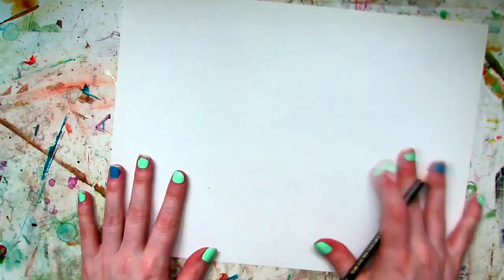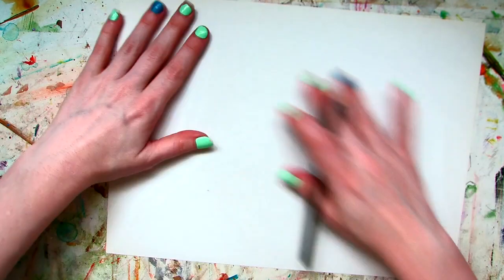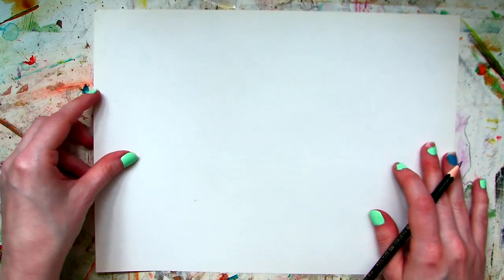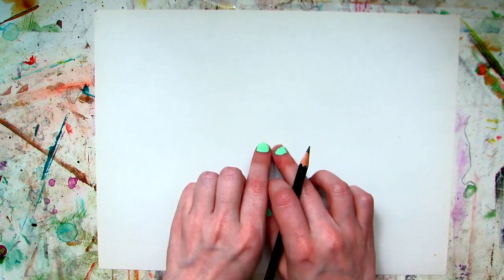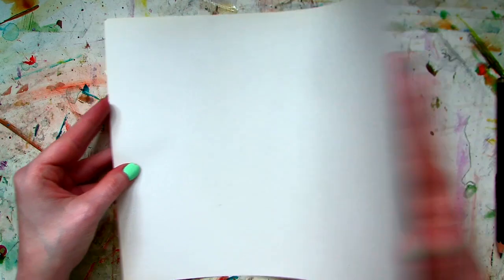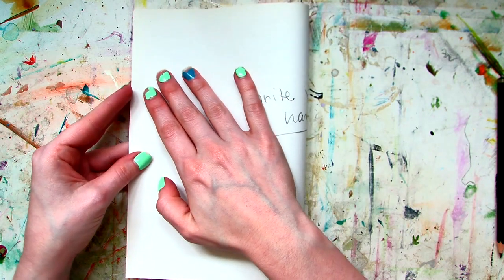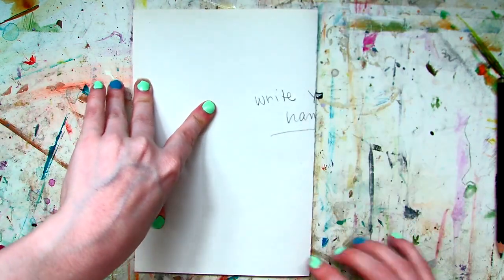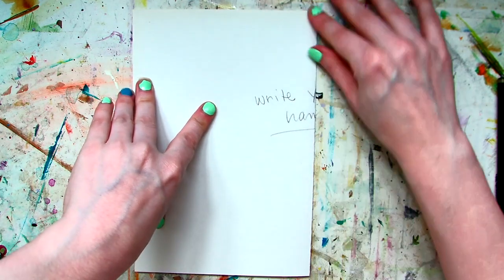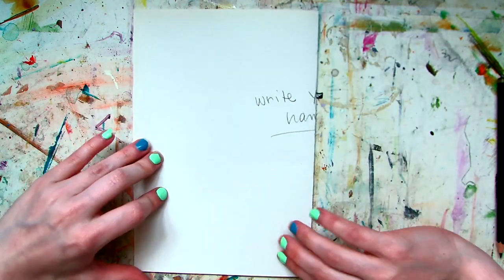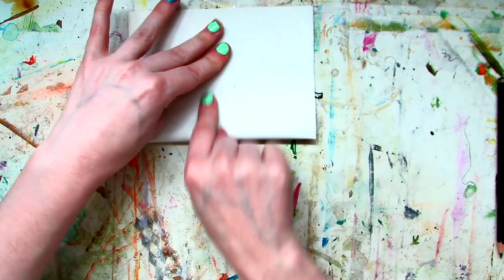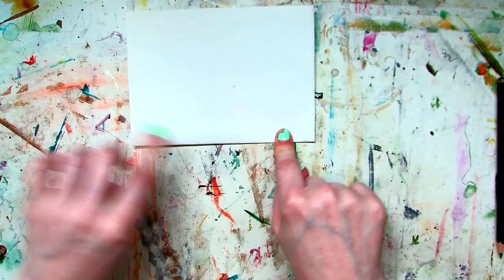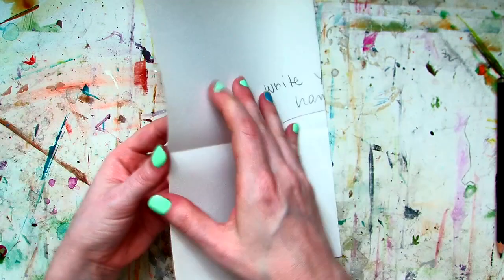So you're going to flip it over. That way, this is the side you're going to be doing everything on. Now, because we're going to do eight boxes, we're going to put in a vanishing point in the center. To find the center, it's going to be very simple. You're going to take your paper, you're going to fold it in half. I know, I know, I usually tell you not to fold your paper. Today we're folding our paper. You're going to take it again, fold it again. You should end up, when you open it, four sections.